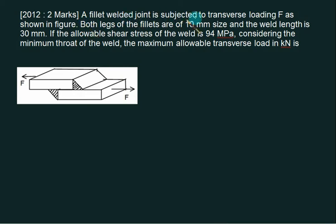A fillet weld joint is subjected to transverse loading F as shown in figure. Both edges of the fillet are 10mm size. The weld length L equals 30mm, and thickness T equals 10mm.